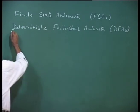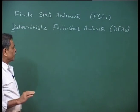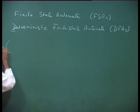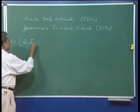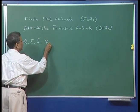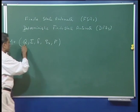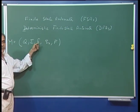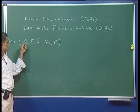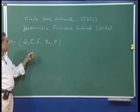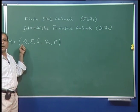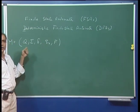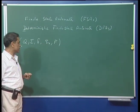For the time being, our model: a machine M has 5 components — Q, sigma, delta, Q0, and F. Q is a finite set of states, sigma is the alphabet, delta is the transition function which is a map from Q cross sigma to Q, Q0 is one particular element of the set of states — this is the initial state — and F is a subset of Q which we call the set of final states.